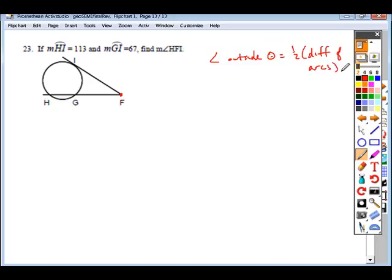Looking at this equation, if we know that HI, this first intercepted arc, is 113, and we know that GI, this closer intercepted arc, is a measure of 67, and we want to find angle HFI,